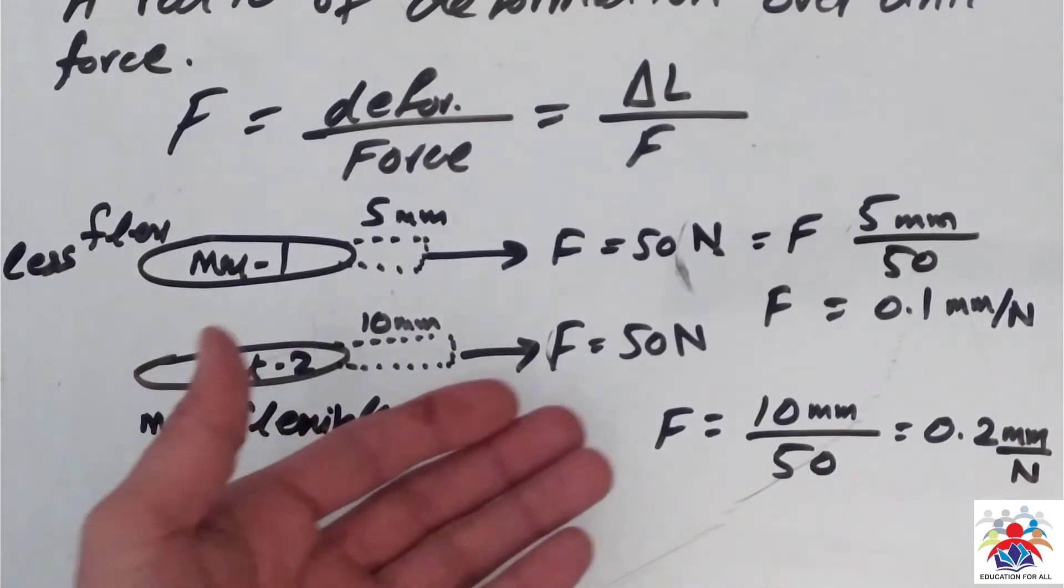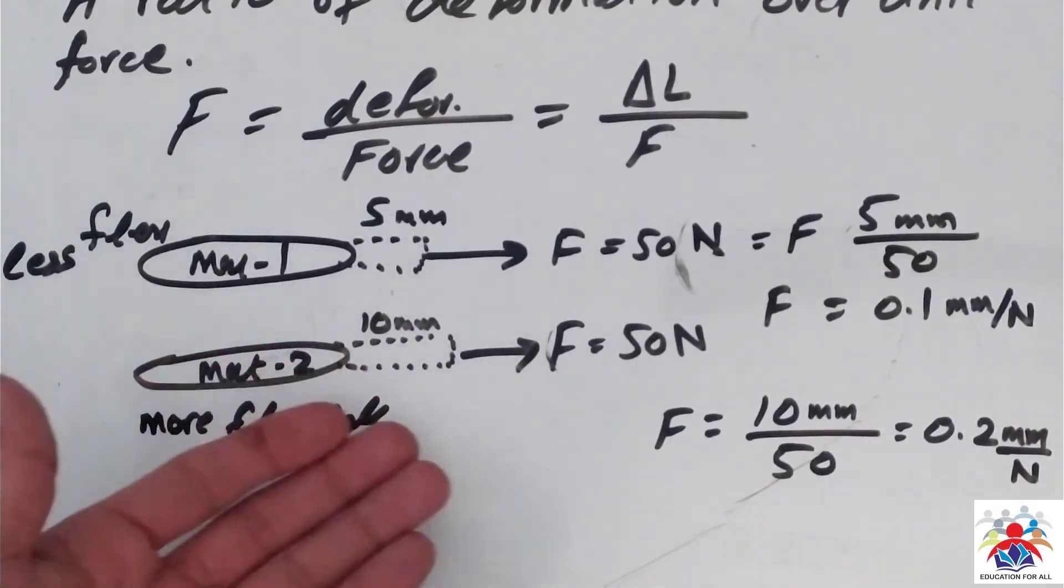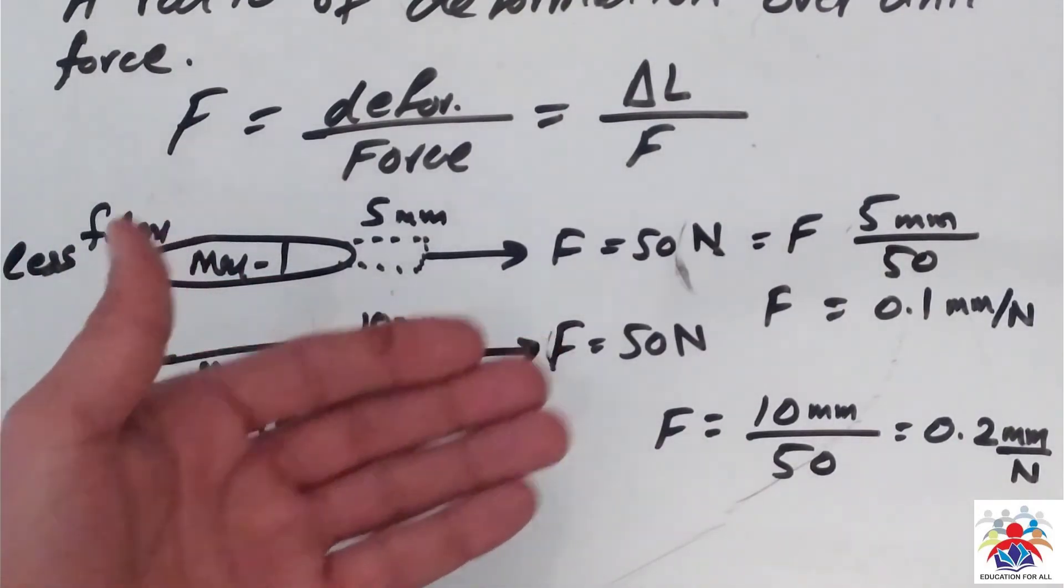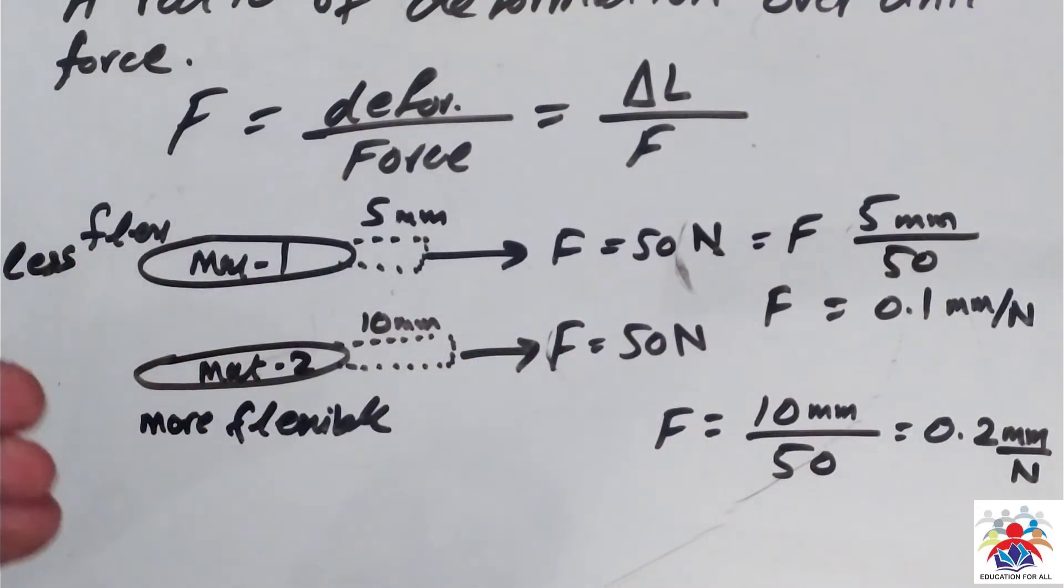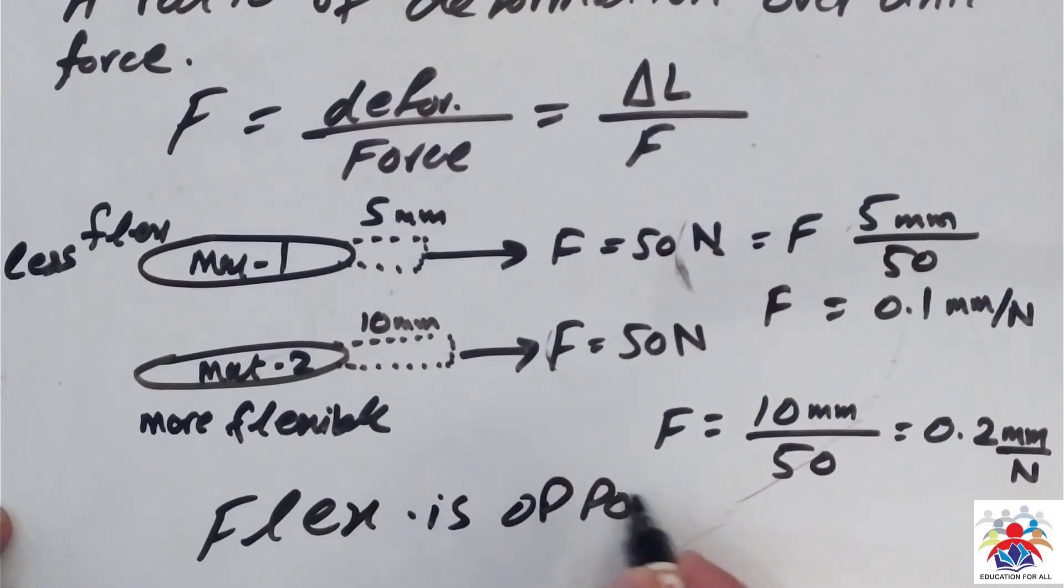And material number two, applying the same force, we have more flexibility. As you can see, the extension of length is more—10 millimeters—so flexibility is more and stiffness is less. So in other words, flexibility is opposite to stiffness.